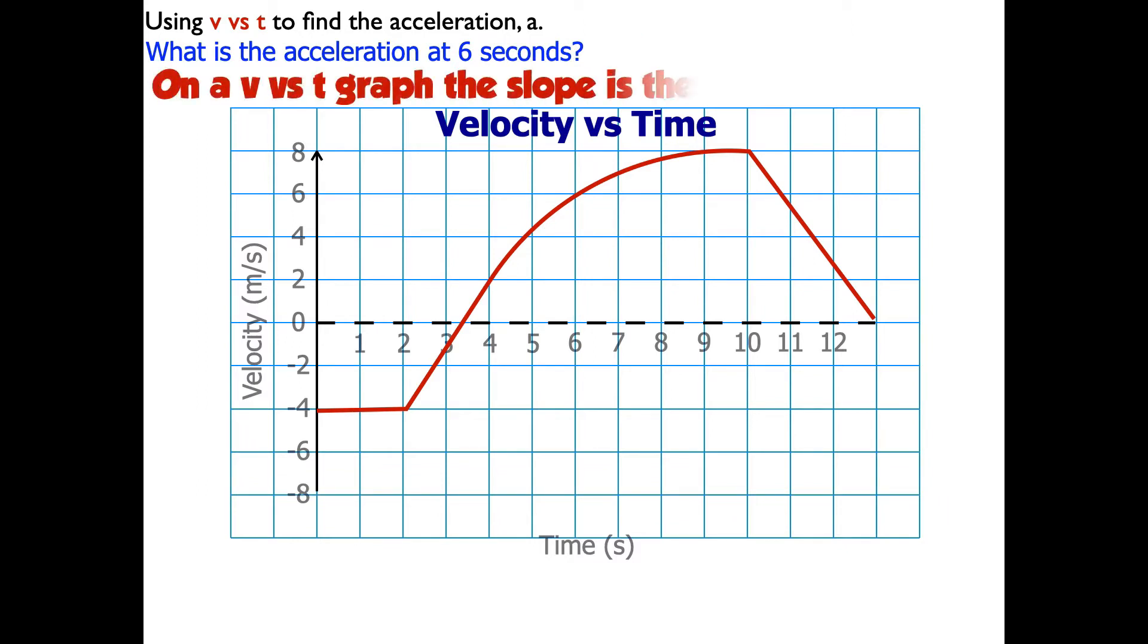So we know from calculus and physics that the slope of the graph on a velocity versus time graph is the acceleration. So in math terms what this problem is actually asking me to do is to find the slope at six seconds.